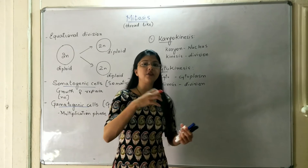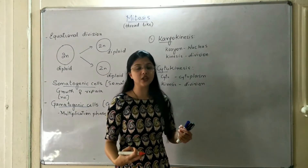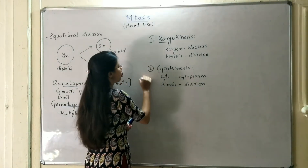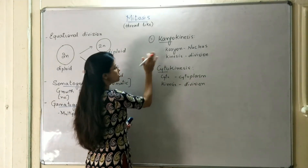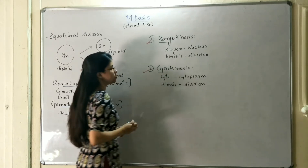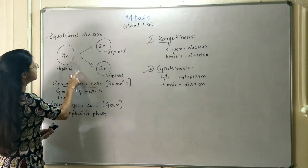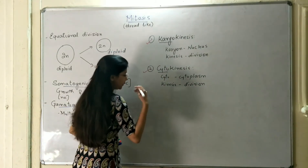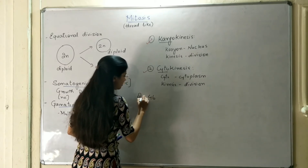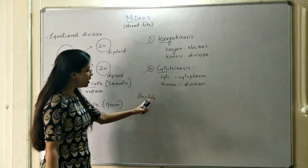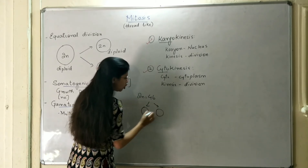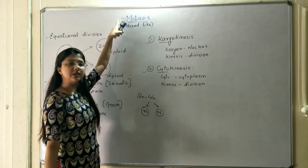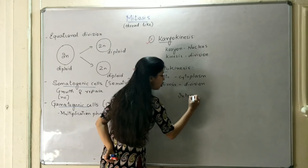First the nuclear material divides, and after nuclear division is completed, only then will the cytoplasmic content be divided. Karyokinesis is the first process and cytokinesis is the second. In the equational division, the diploid number of chromosomes remains the same. For example, in the human cell, the total number of chromosomes is 46 — 2N equals 46. So when a human somatic cell divides, the two daughter cells formed also have 46 chromosomes. This happens because before the cell enters the mitosis phase, it undergoes a phase called interphase.